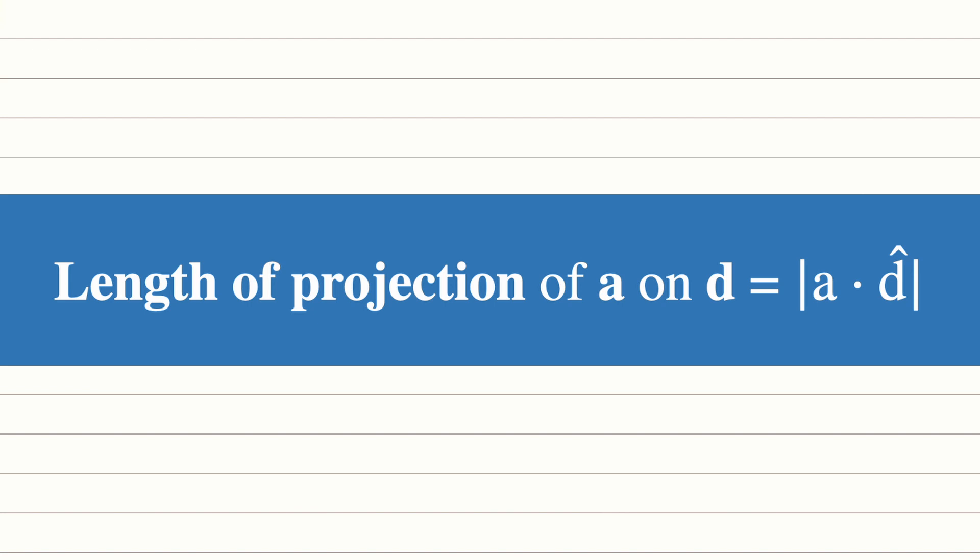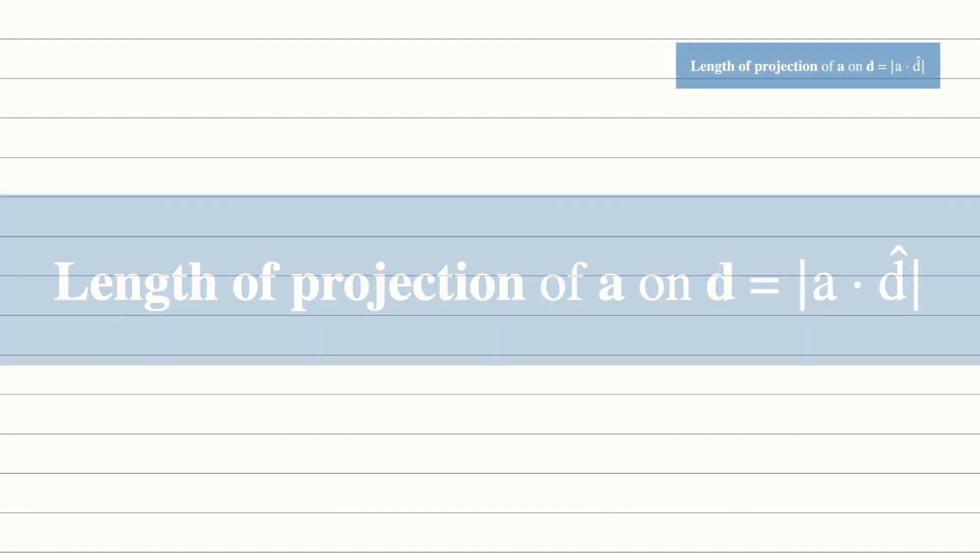Now let's try to understand how this came about. Suppose we have a vector a equals to ab and a line l, and suppose vector d is a vector parallel to the line l. If we were to draw a line from a perpendicular to l to intersect at l at point m, m is then called the foot of the perpendicular from a to l.